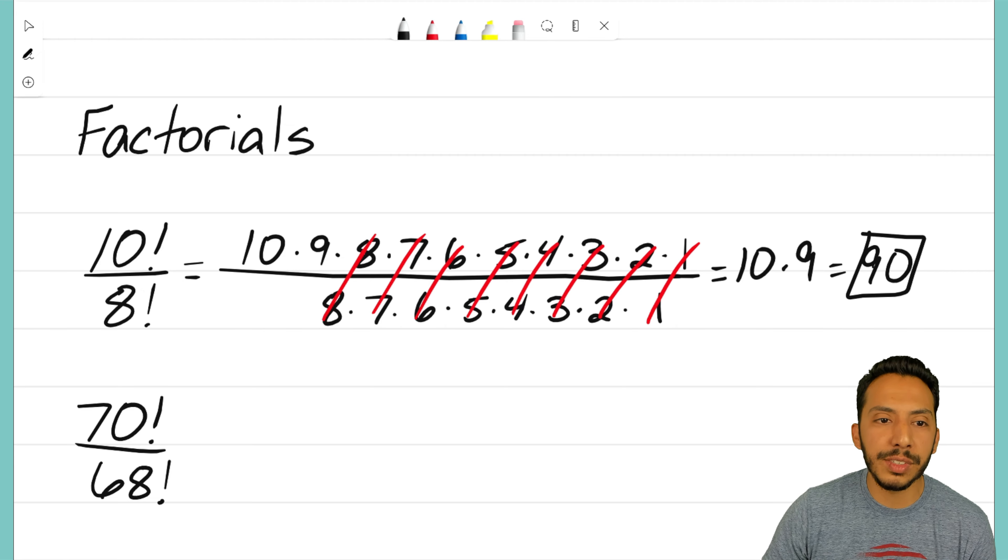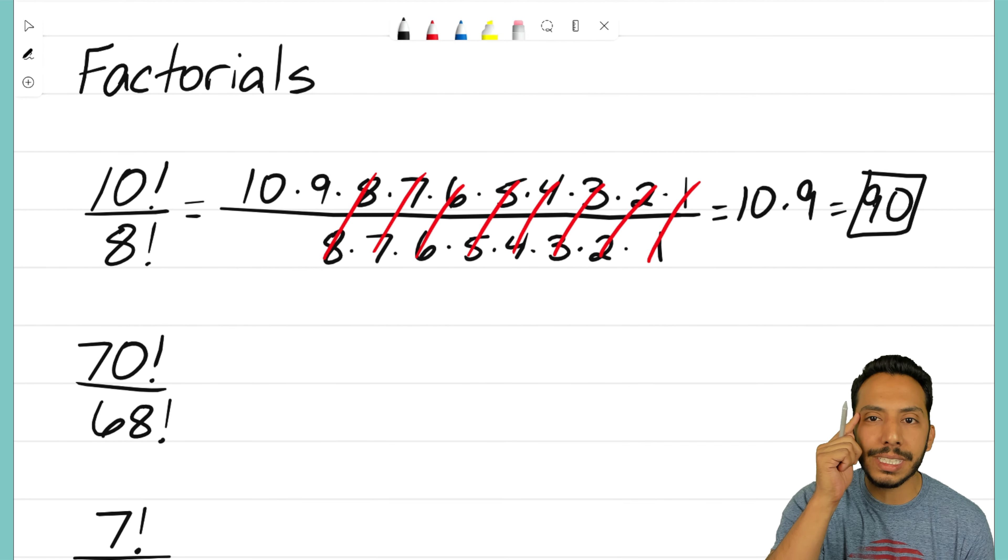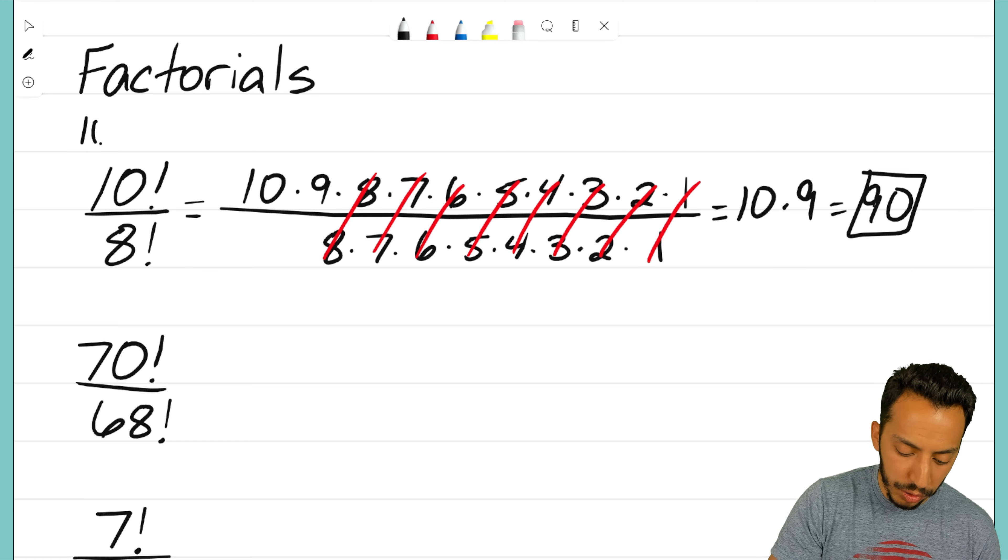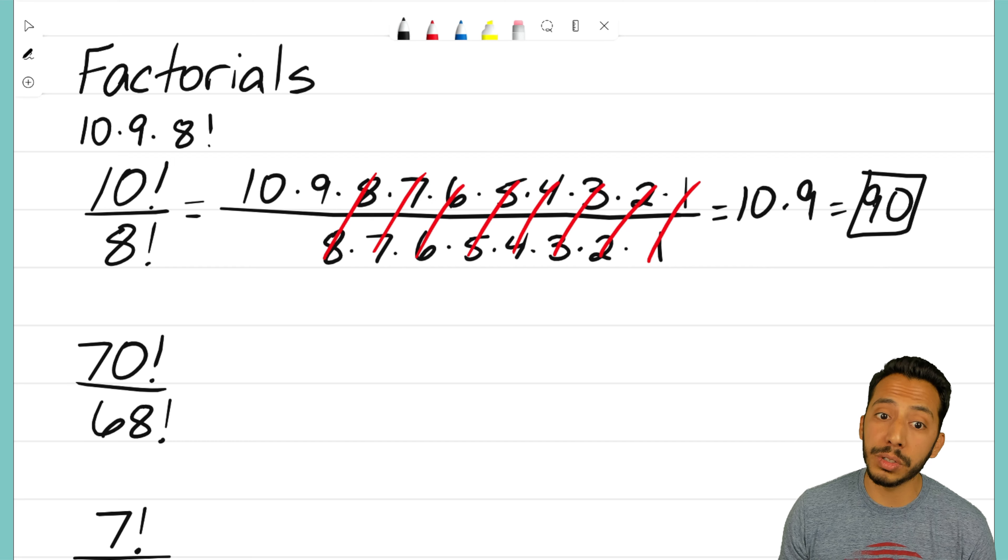You're left with the 10 and 9 on top, and you can see that in this fraction. If we turn our brains on for a second, that might start to click for some of you. 10 factorial is really just 10 times 9 times 8 factorial. All of this stuff afterwards is just 8 factorial, then of course those 8 factorials cancel.